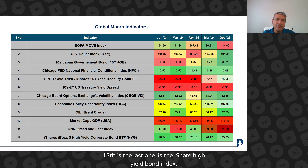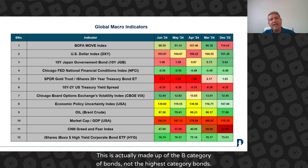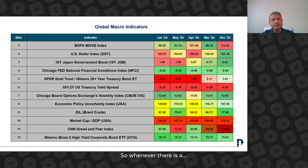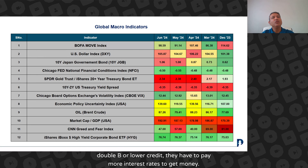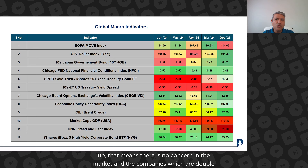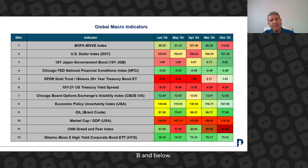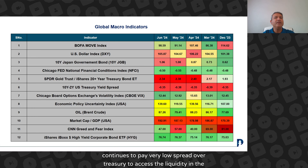The twelfth and last one is the iShares High Yield Bond Index. This is made up of double-B category bonds — not the highest category bonds. Whenever there is risk concern, these spreads widen, where companies with double-B or lower credit have to pay more interest rates to access money. So this ETF tells you that if the price of the ETF is going up, there is no concern in the market and companies which are double-B and below continue to pay very low spreads over treasuries to access liquidity in the market.